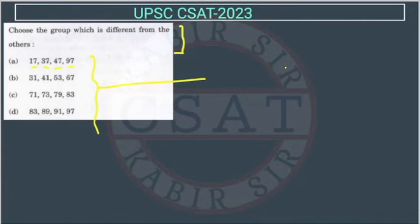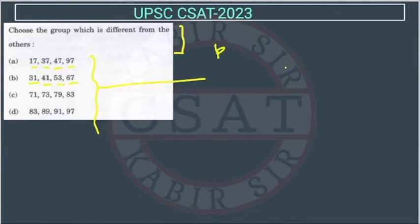If you try to find a general relationship, this will be difficult. But the key insight is that all these numbers are prime numbers — 17 is prime, 37 is prime, 47 is prime, 97 is prime.